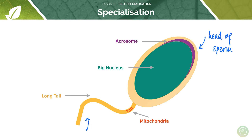Moving from the head of the sperm to the tail end, we can see the tail, which is used for motility. The sperm has to swim through the female reproductive system towards the egg, and this is its method of doing that.